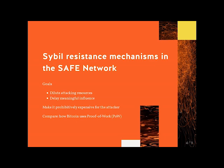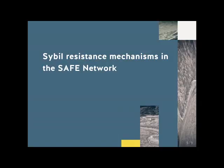As an example, Bitcoin accomplishes Sybil resilience using proof of work to make it so that it's not enough to control the majority of the nodes in the network — you also need to control more than half of the hash rate. Now in the SAFE network, using a proof of work blockchain isn't a viable solution, so the question is then how can we accomplish something similar?